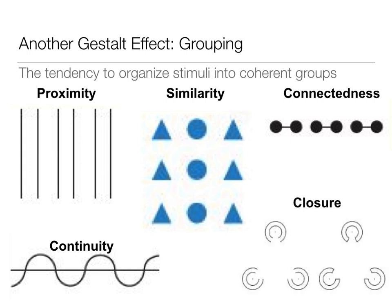Another grouping principle is closure. These images are illusory contours. On the left image, you're likely to see a triangle on top of three circles, because without closure — the lines aren't closed off — you perceive a triangle that isn't really there. The image on the right has closure and looks like C-shapes without a triangle present. This illustrates how our brain uses closure as a grouping mechanism.